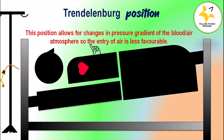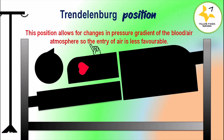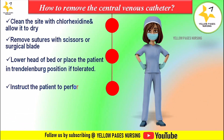It should be ensured that the central venous catheter is removed at the end of inspiration. Instruct the patient to perform the Valsalva maneuver — take a deep breath in and hold it. This step is not possible if the patient is on a mechanical ventilator; in such cases, the catheter is removed at the end of inspiration.